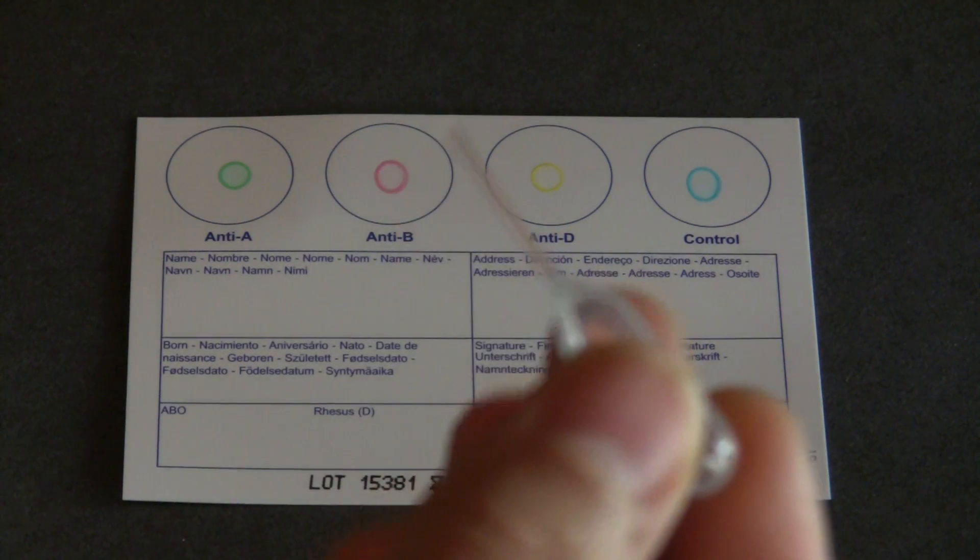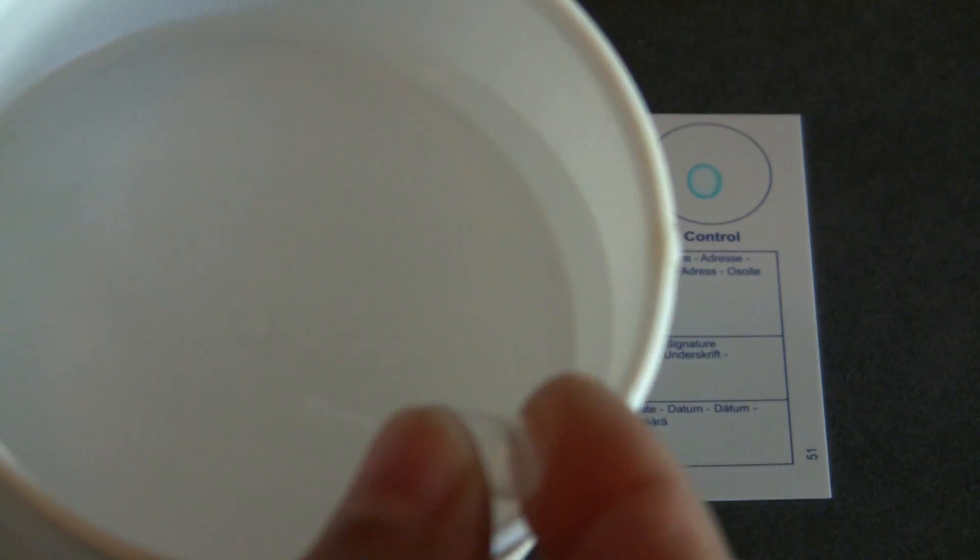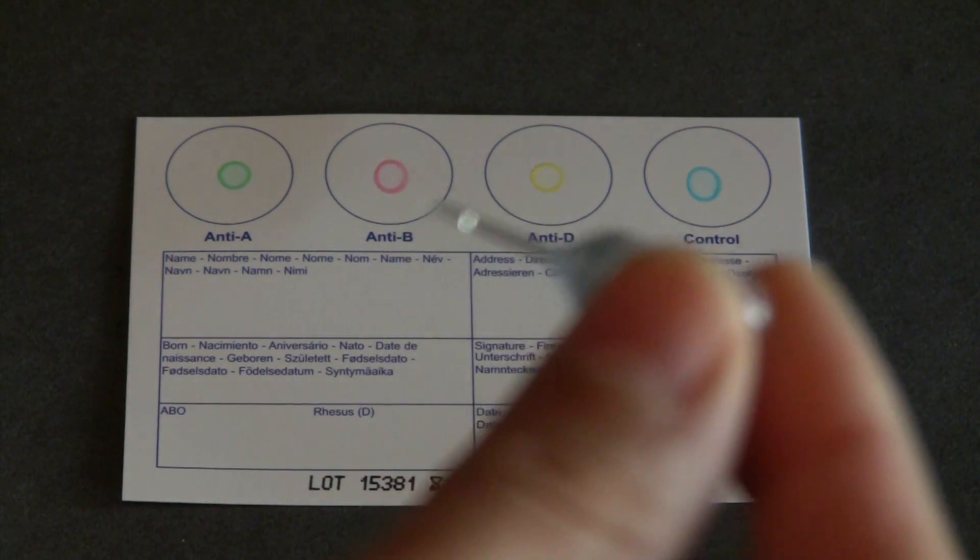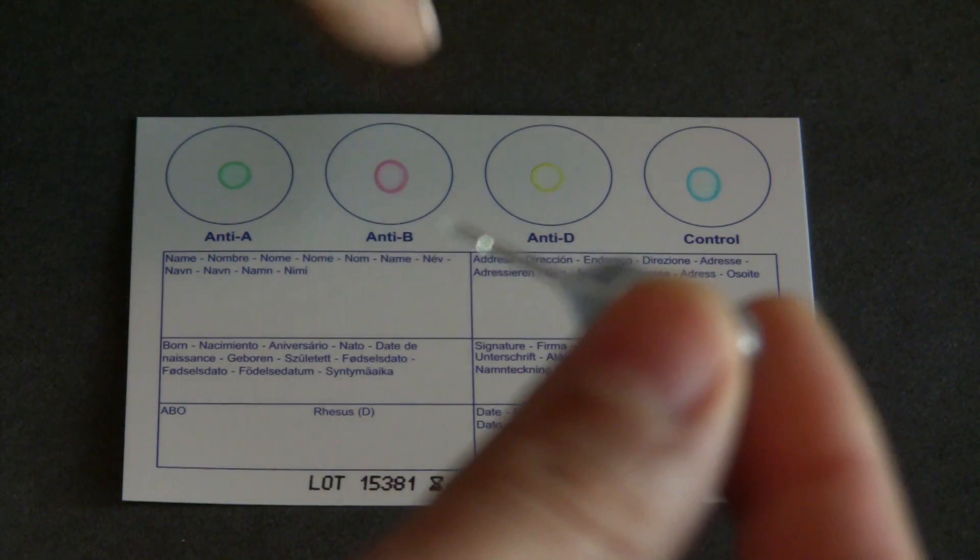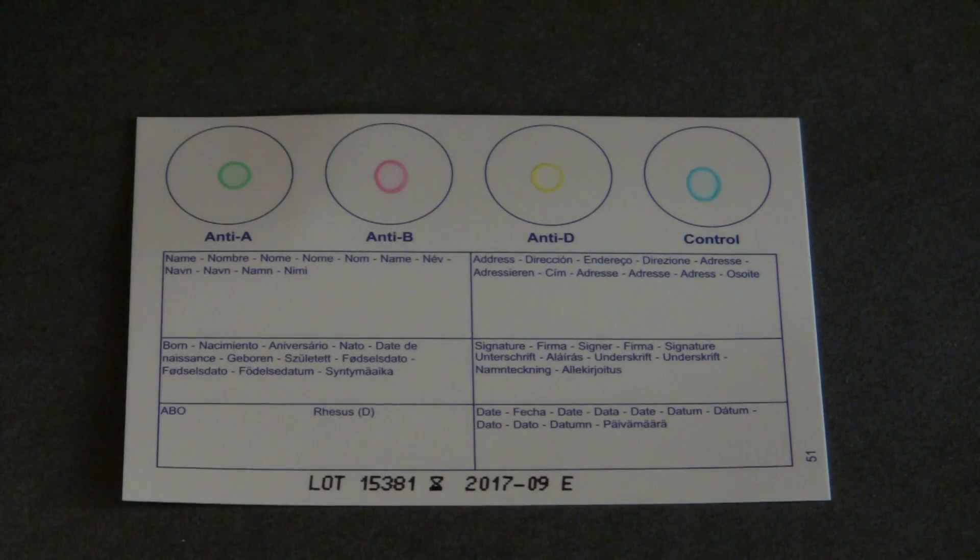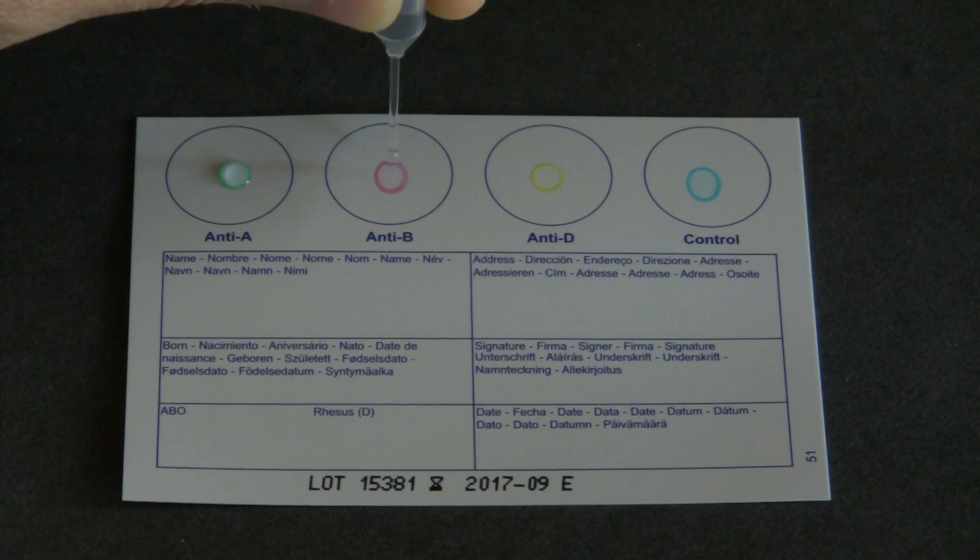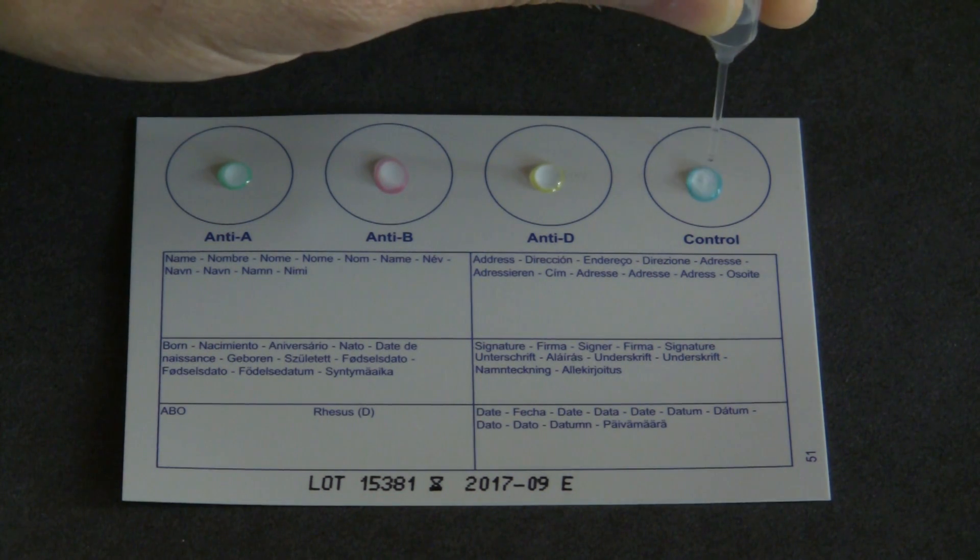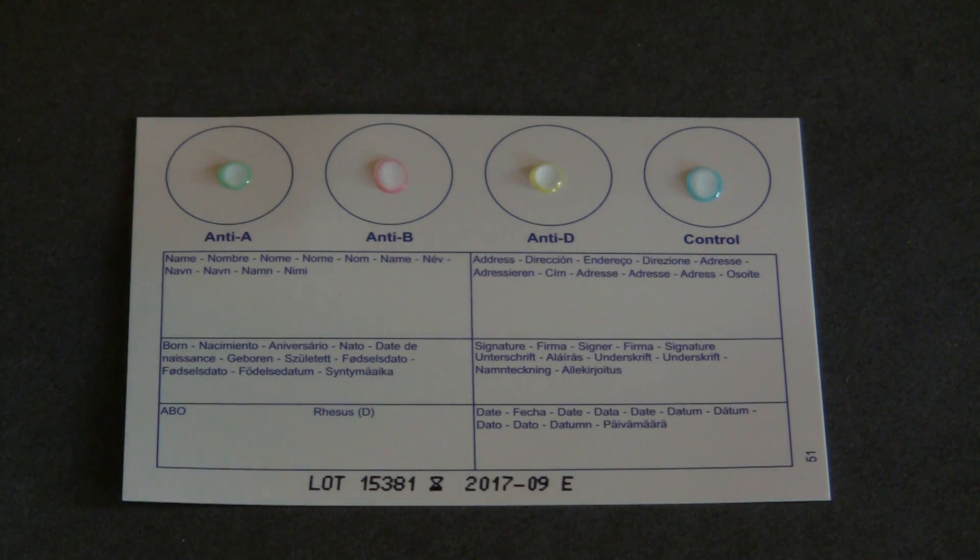All righty, so now we have the little dropper and I have a little small cup with water. I'm going to suck some water into the dropper and I'm going to put one drop onto each one of the blood type sections, making sure that I'm only putting one drop, one, two, three, and four. And one drop of water.